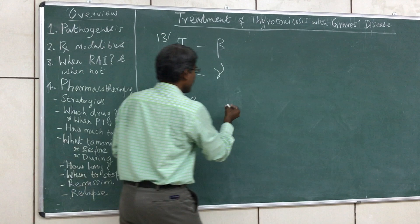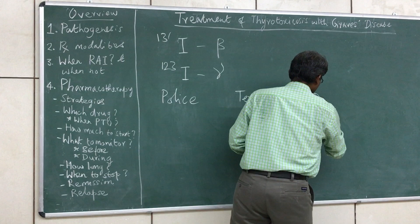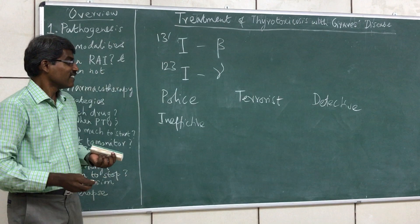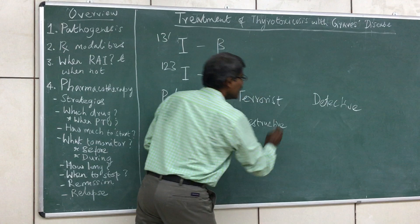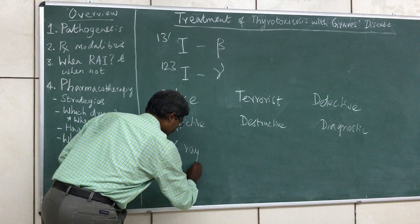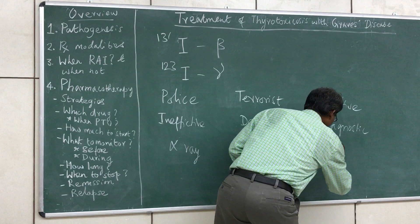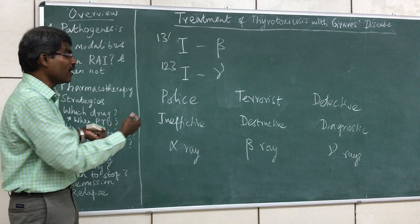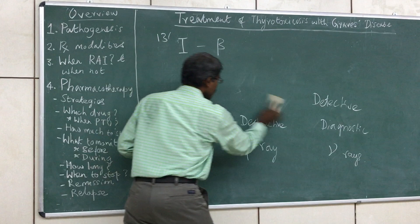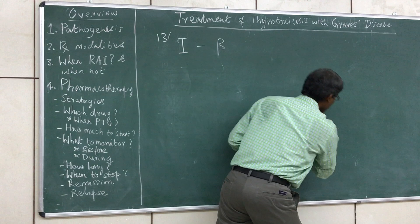To remember which rays each type emits, bring to mind three people: a policeman, a terrorist, and a detective. Police are ineffective — that is alpha. Terrorists are destructive — that is beta. Detectives are diagnostic — that is gamma. With this analogy you will never confuse them. The dose of radioactive iodine for treatment is a single dose of 10 to 15 millicuries.